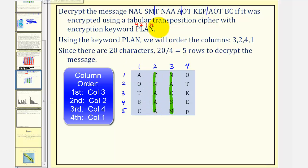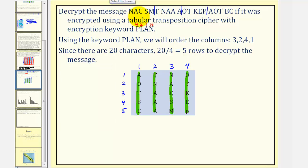Third will be the fourth column because of the N. We'll have OTKEP. And then fourth will be the first column because of the P, which will be AOTBC. And now we'll use the rows to decrypt the message. The original message was at noon, attack base camp.